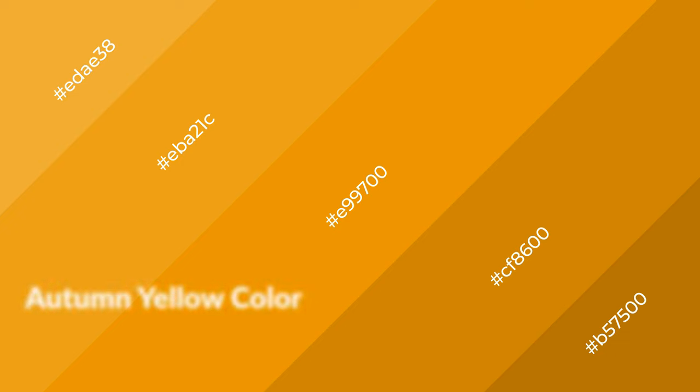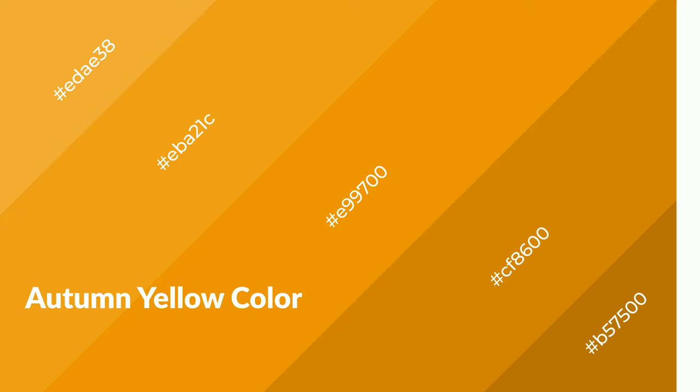Autumn yellow is a warm color and it emits cozier and active emotions. Warm colors are symbols of warmth, fire, heat, and sunshine. It also evokes joy, passion, love, and even anger. You can see them used in restaurants and gyms.